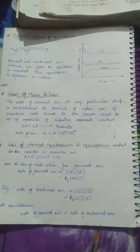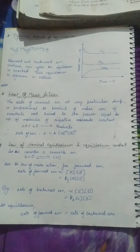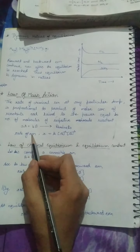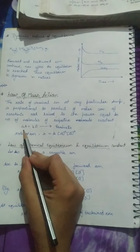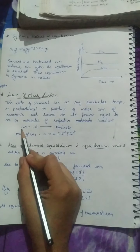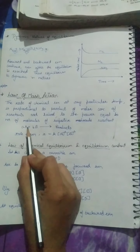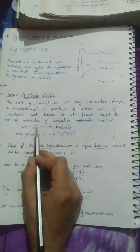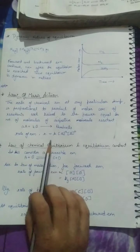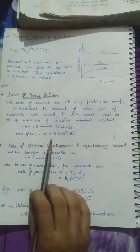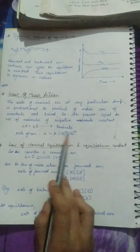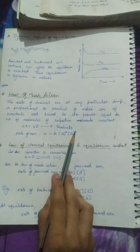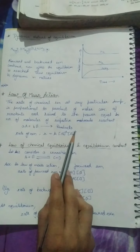This law gives you the expression for the rate of reaction. The reaction is given as aA plus bB, where these are the reactants to form the products. Small a denotes the number of molecules of reactant A, and small b denotes the number of molecules of reactant B. According to this law, the rate of reaction is directly proportional to the concentration of reactants A and B, each raised to the power equal to the number of molecules of that reactant.